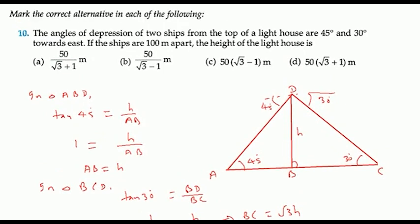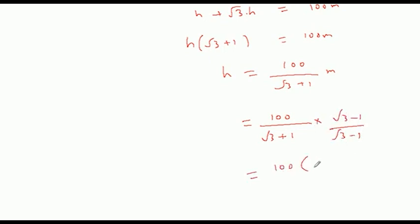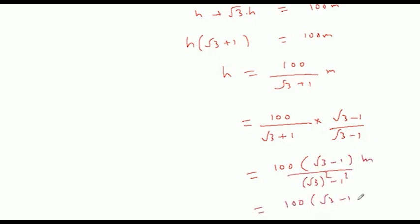The answer to the question is: H equals 100 divided by (root 3 plus 1). Rationalizing by multiplying by (root 3 minus 1) over (root 3 minus 1), we get 100 times (root 3 minus 1) divided by 2. So H equals 100(root 3 minus 1) over 2, which simplifies to 50(root 3 minus 1) meters.